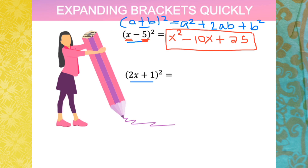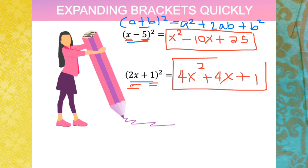That is our final answer — this is a quicker way to collect all terms instead of expanding one at a time. Now for the second one, (2x plus 1) squared: the square of the first term is 4x squared; the operation is plus, so we place plus twice the product of 2x and 1 — which is 2x times 2 — giving plus 4x; plus the square of the last term, which is 1. Therefore the final answer is 4x squared plus 4x plus 1.